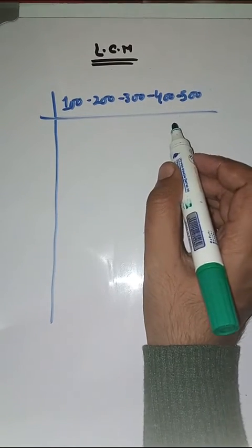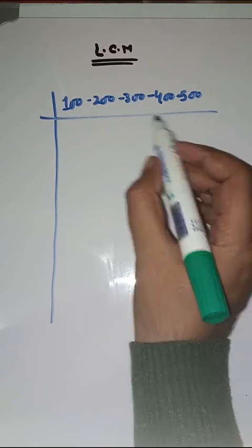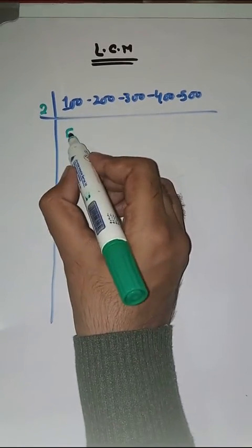So what will we do? First we find prime factors of these five numbers and then we'll find LCM. So let's start. We start with 2.